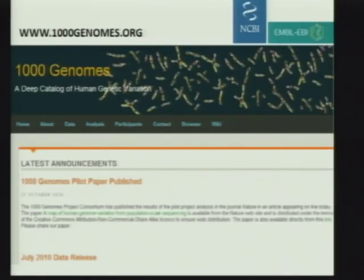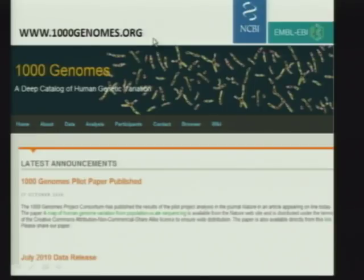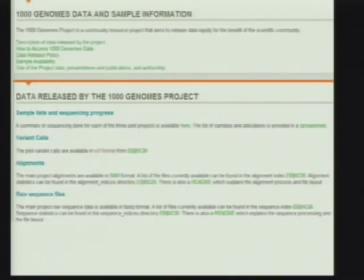Having reviewed those three data types, let me take you on a quick tour of where the data is available on the FTP site or the browser. thousandgenomes.org is the URL you should start with. This is hosted by EMBL-EBI, and the data behind it is mirrored both at NCBI and EMBL. The most important link is probably the data link — that's where you go to access all of the data. That page reviews the data release policy, conditions for use for publications, authorship, and what credit the consortium would appreciate.